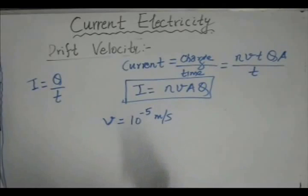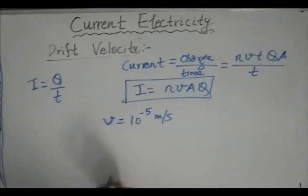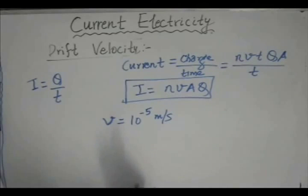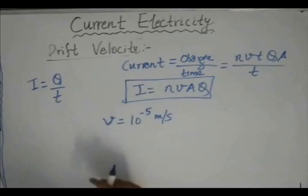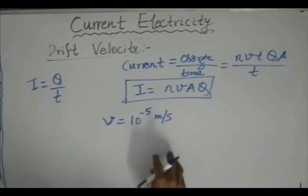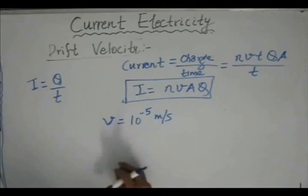What will happen is that as soon as we switch the bulb on, the electrons which are very near to the filament will drift towards the filament. These are the electrons which are responsible for the glowing of the bulb. That means the electrons need not complete the entire path — each electron need not complete the entire loop in order for current to flow. It is only the field which is making the electrons drift, and the electrons very near to the filament, as soon as they pass through the filament, we observe a flow of current.